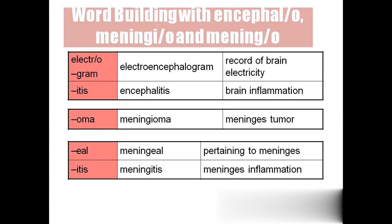'Electroencephalogram' — this is very similar to ECG and EMG; we use it to record the electrical activity of the brain. 'Encephalitis' — 'encephalo' means brain and '-itis' means inflammation, so encephalitis means brain inflammation.